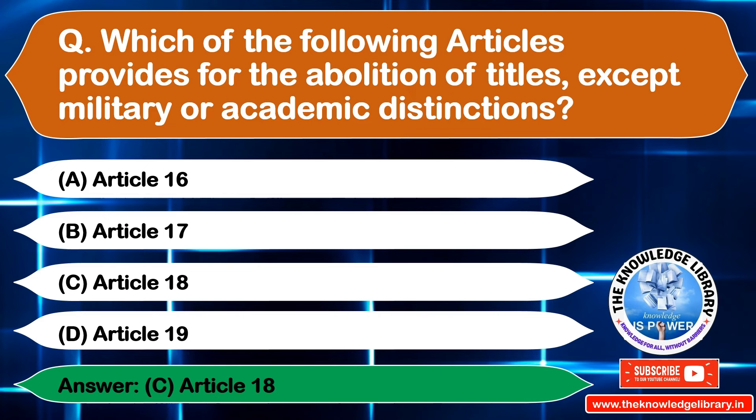The next question is: which of the following rights is guaranteed under the right to freedom of speech and expression? Option A: Right to vote, Option B: Right to protest peacefully, Option C: Right to property, Option D: Right to education. The correct answer is Option B: Right to protest peacefully.